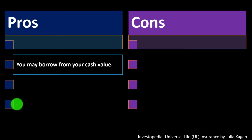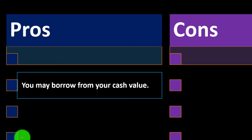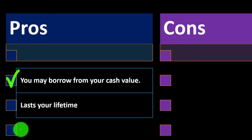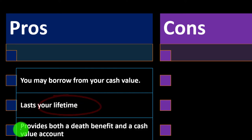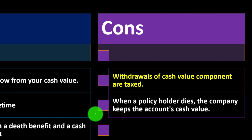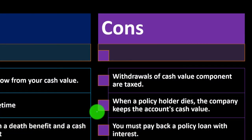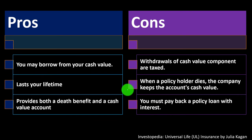The pros and cons. Pros: you may borrow from the cash value — if times are tough and you need money, you might be able to borrow against it as a last resort. It lasts your lifetime, unlike term insurance. And it provides both a death benefit and a cash value account. Cons: withdrawals of the cash value component are taxed. When a policyholder dies, the company keeps the account's cash value. You must pay back a policy loan with interest — if you take out a loan against the cash value, interest will be charged.